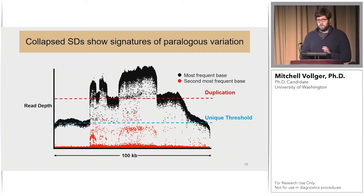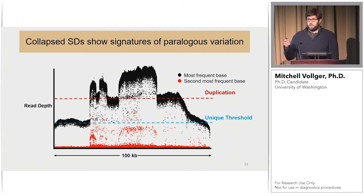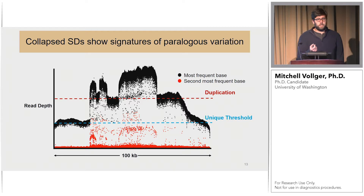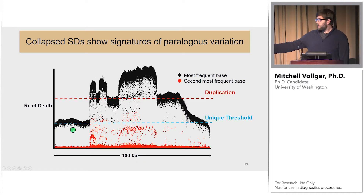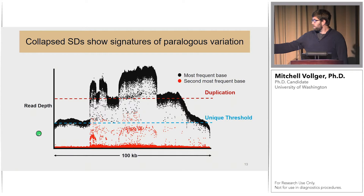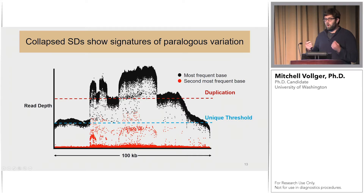Many segmental duplications are resolved in HiFi assemblies, but many remain unresolved. One way they manifest is as collapses in the de novo assembly — where one copy appears in the assembly but many exist in the genome. This can be visualized in a read depth profile: unique sequence shows normal depth, while collapsed duplications show jumps to 2x or 3x coverage. Variants shown in red at high frequency are paralogous sequence variants (PSVs) that distinguish the different copies of a duplication and may help us assemble them.